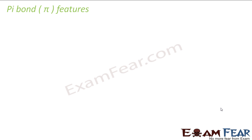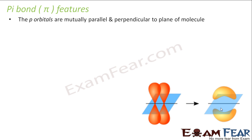We'll talk about some of the features of the pi bond now. The p orbitals are mutually parallel and perpendicular to the plane of the molecule. These p orbitals are mutually parallel, and they both are perpendicular to the plane of the molecule, and they form pi bonds.